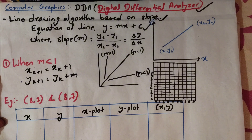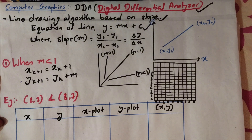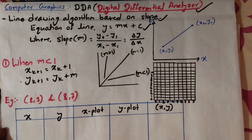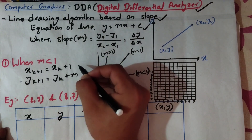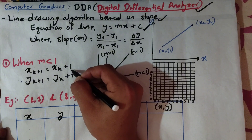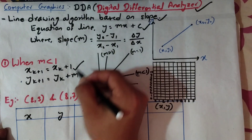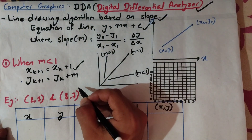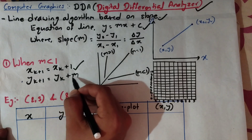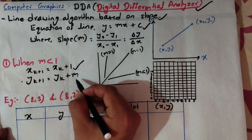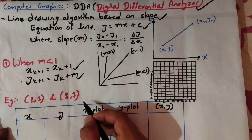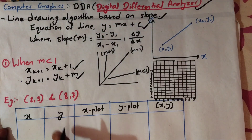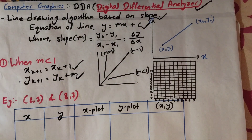First, we are going to review the slope values. We take x increments and apply the slope into each step. The x value increments by 1, and the corresponding y value is calculated. Now we have to solve the numerical question.